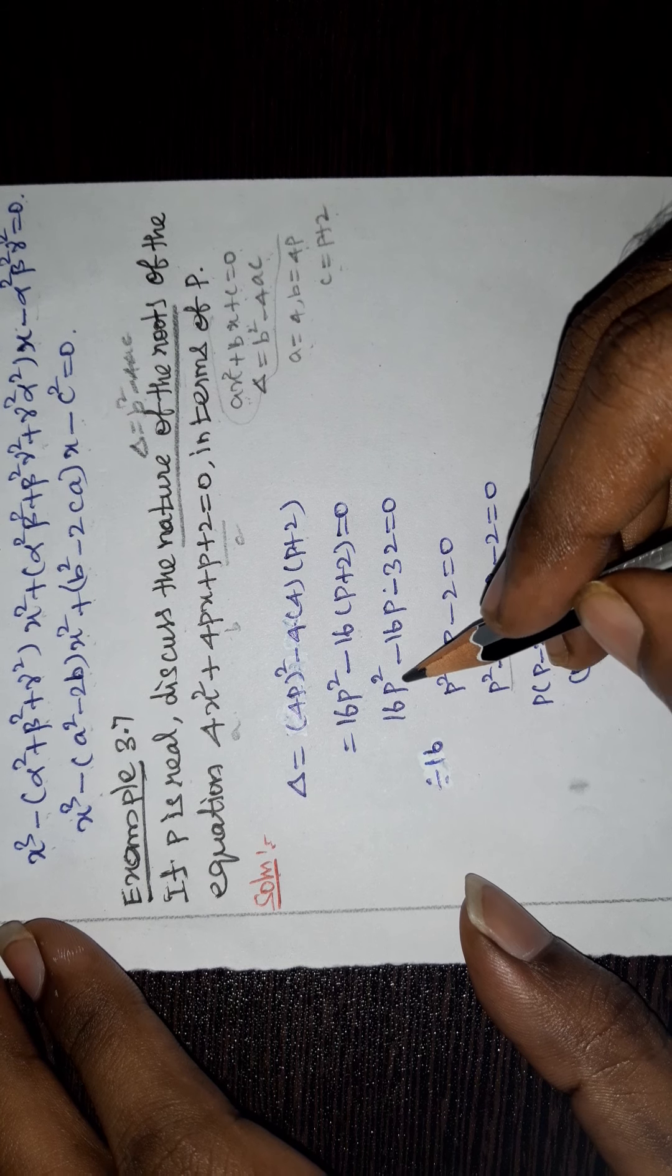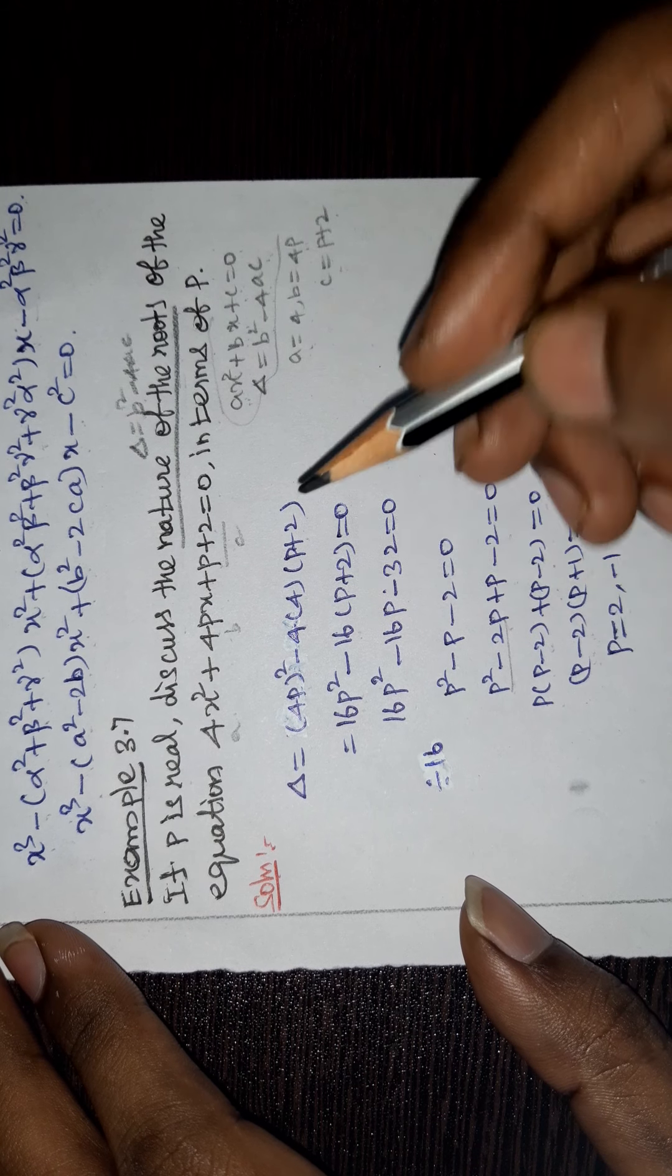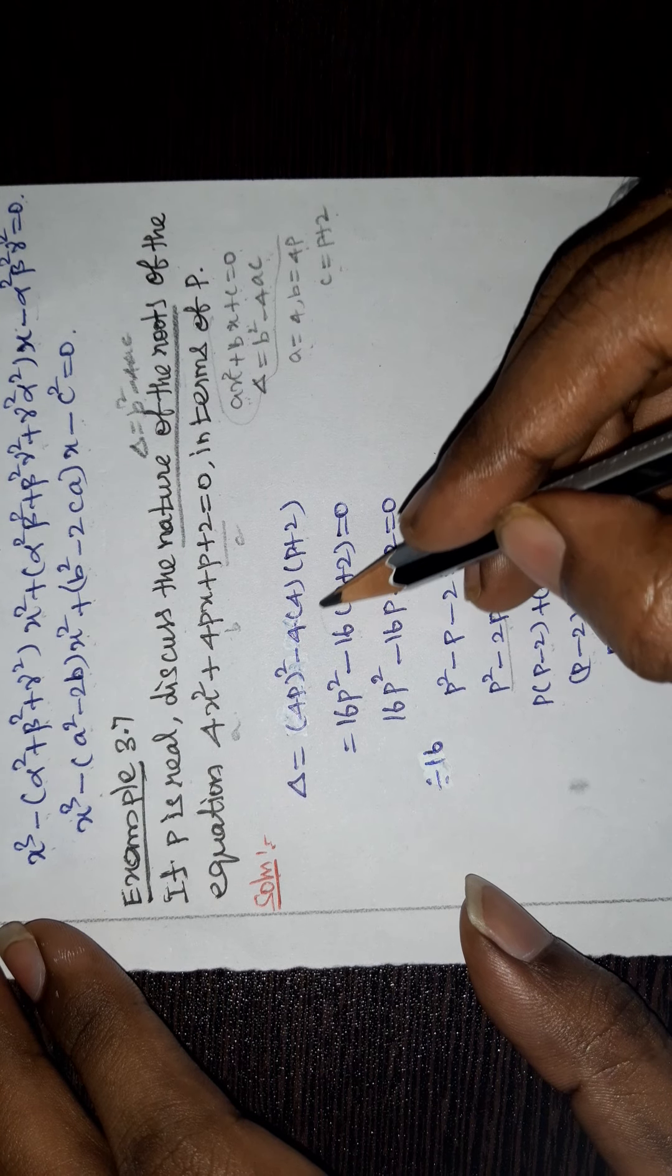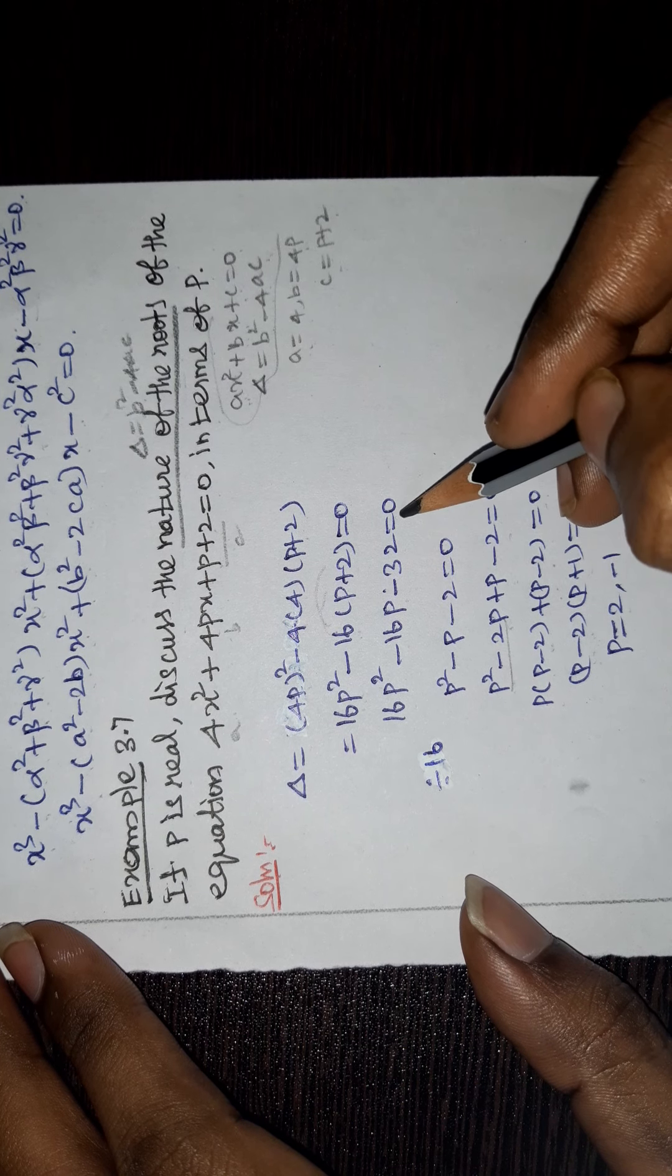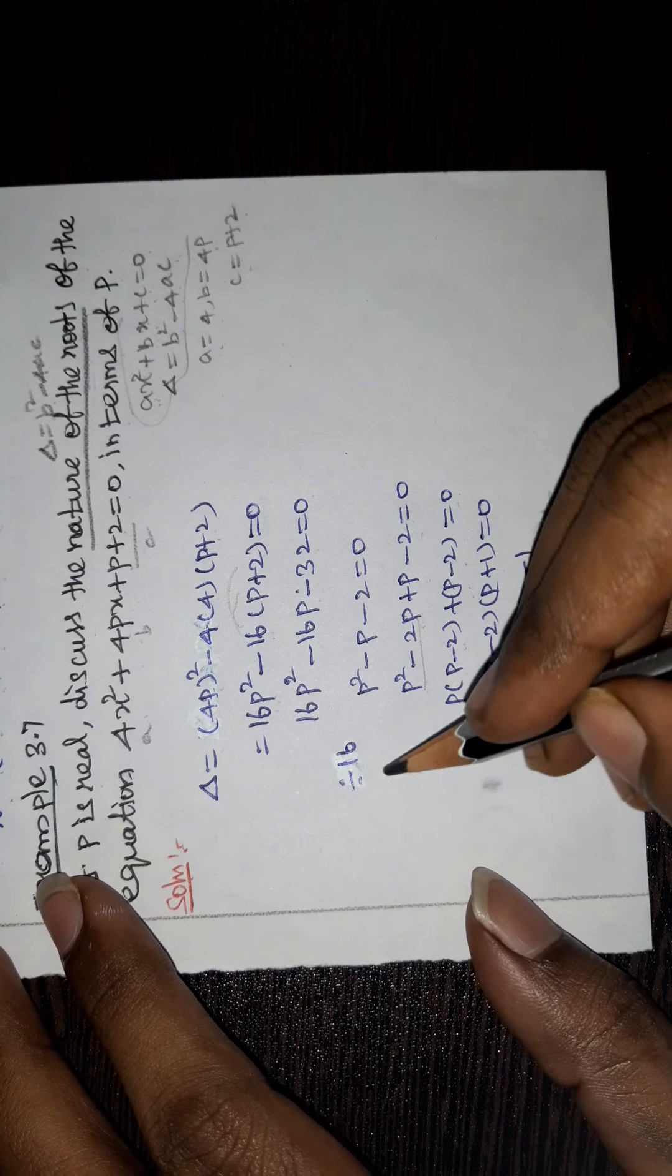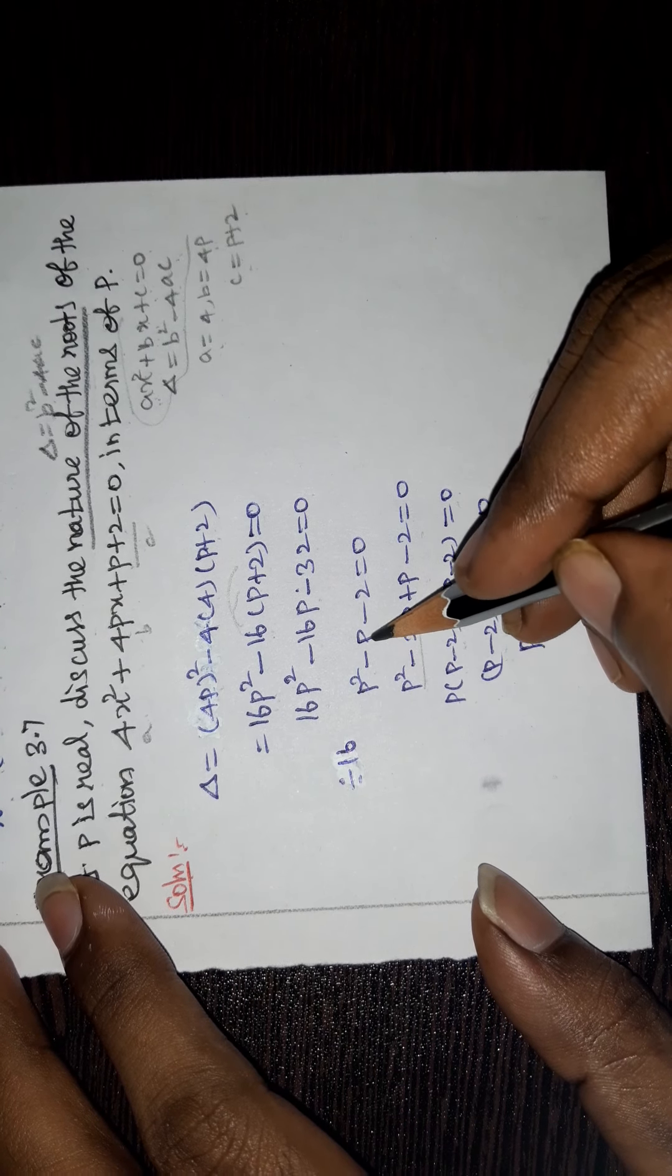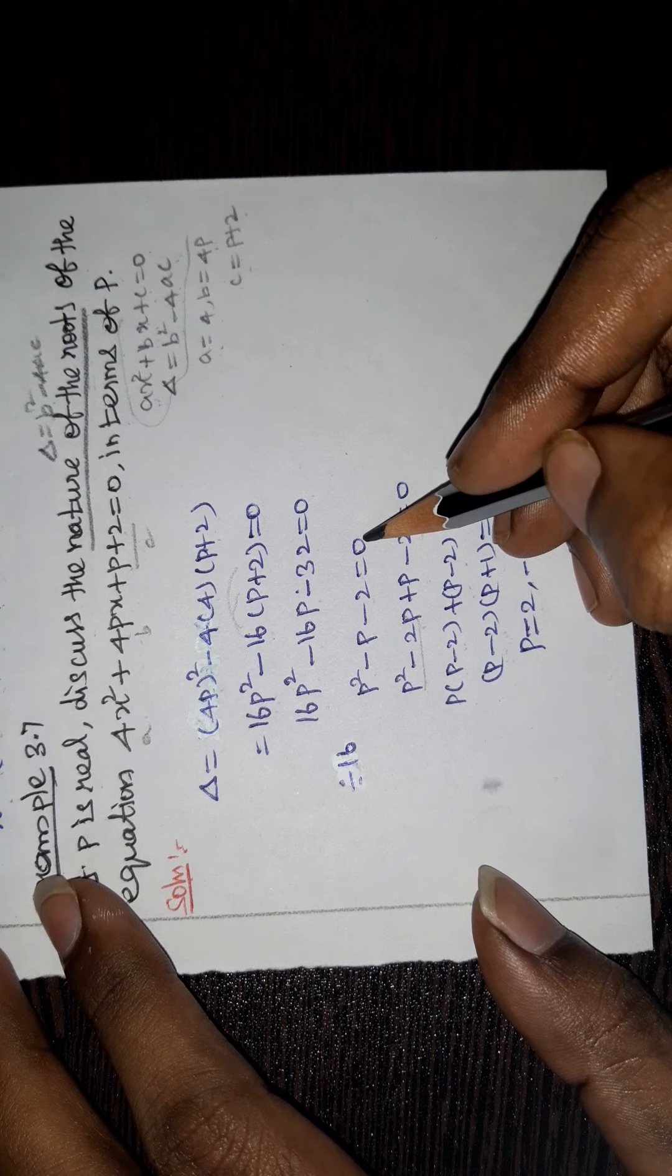16p² minus 16, multiply with each term, gives minus 16p minus 32 = 0. Dividing by 16, we get p² - p - 2 = 0.